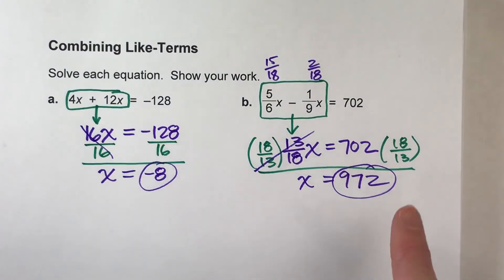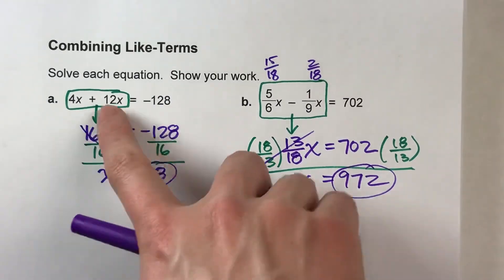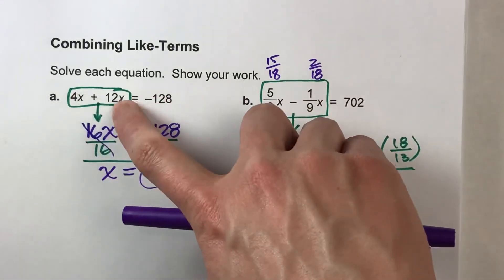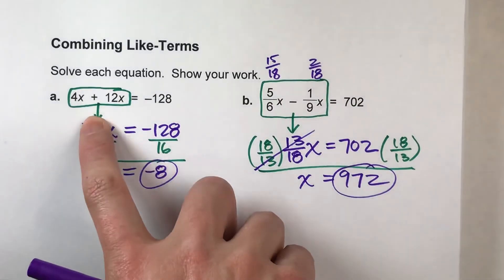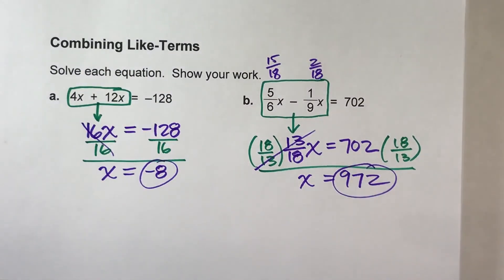So when we're solving equations, make sure you look on each side of the equal sign to see if you have multiple groups of x's. If you do, you can combine them. And that's what we mean by combining like terms.